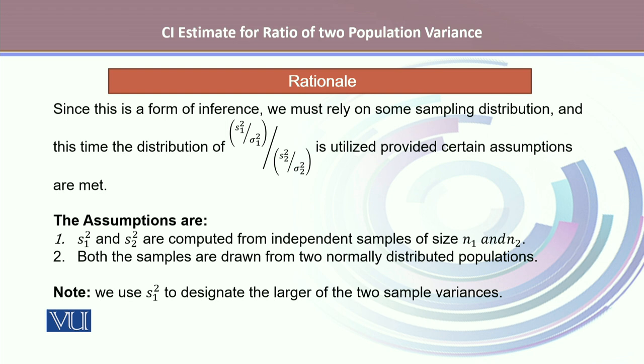Since this is a form of inference, we must rely on some sampling distribution. This time, the distribution of S1 square divided by sigma 1 square divided by S2 square divided by sigma 2 square is utilized, provided certain assumptions are met.